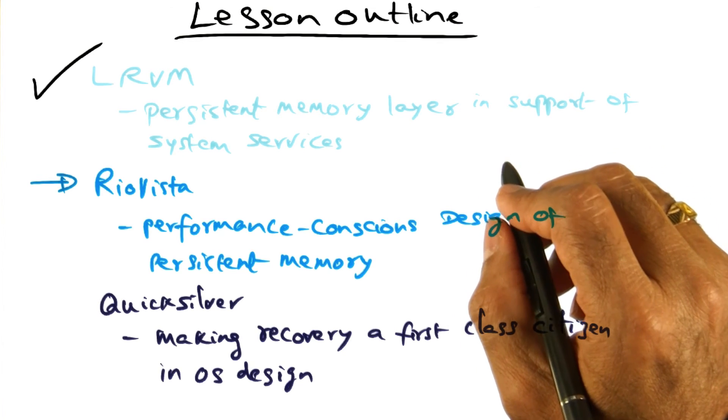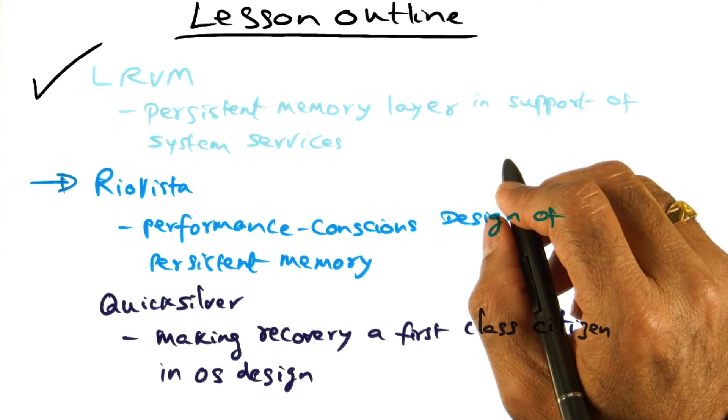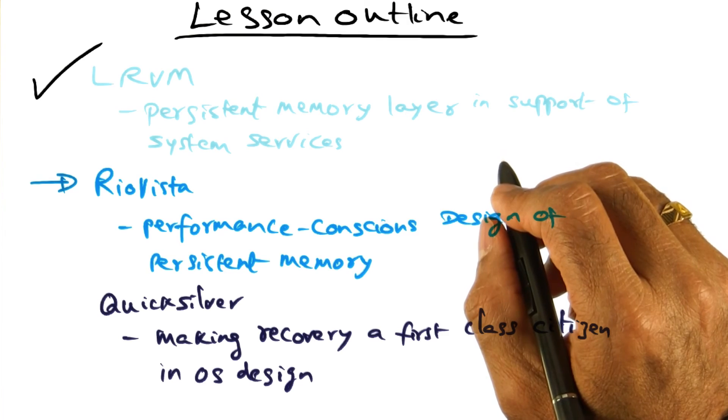If disk IO can be eliminated, then transactions would be cheap. And if transactions become cheap, then everyone will use it, and life is good.